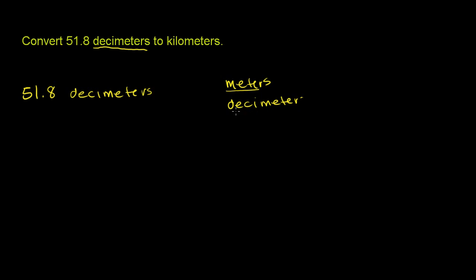Now, one meter is how many decimeters? Well, the prefix deci means 1 tenth. So 1 decimeter is 1 tenth of a meter, or another way of thinking about it is there are 10 decimeters for every meter. This is a smaller unit. 10 of these make up 1 of these. Or 1 tenth of a meter per decimeter, which is exactly what that is telling you.